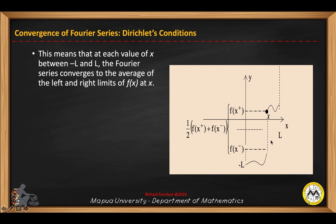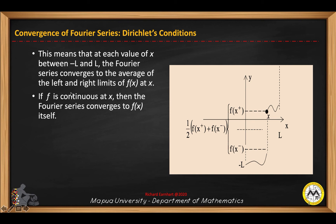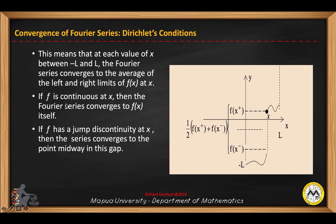This means that at each value of x between negative l and l, the Fourier series converges to the average of the left and right limits of f of x at x. If f of x is continuous at x, then the Fourier series converges to the function itself. But if the function has a jump discontinuity at x, then the series converges to the point midway in the gap. This is the limit of the function as x approaches x from the left, and this is the limit as x approaches x from the right.